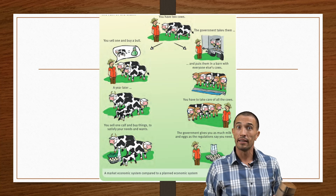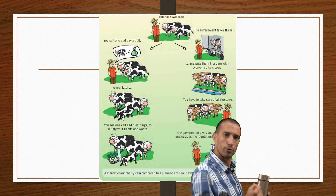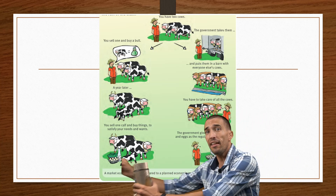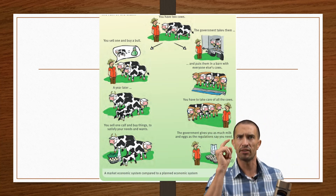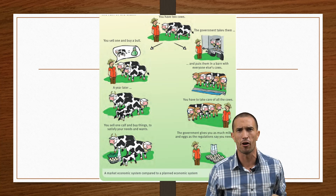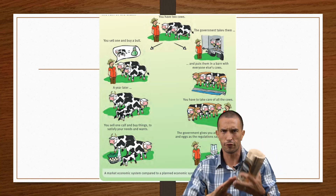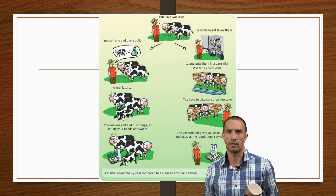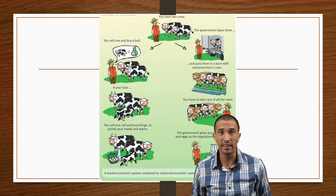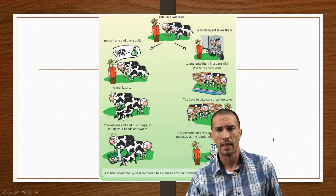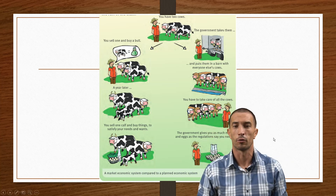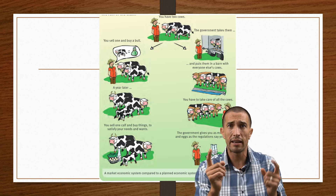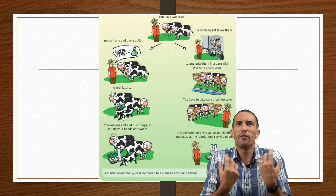Looking at our cartoon on the right-hand side: you have two cows. The government comes and collects your two cows — it goes to all the farms and collects all the farmers' cows. Then the government says, 'You look like a farmer, you've got the skills, the clothes, the tools — we want you to manage it.' So you become the farmer managing everyone's cows.